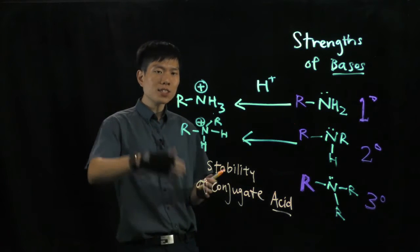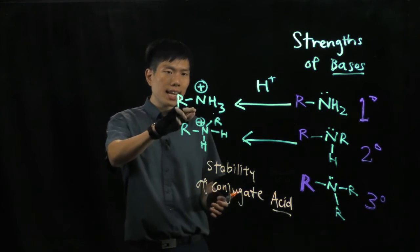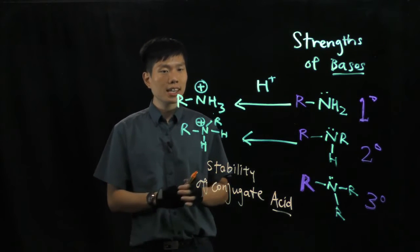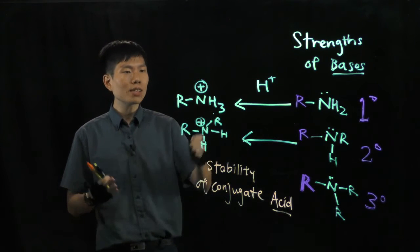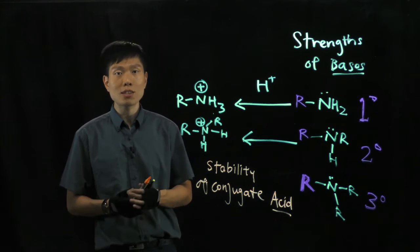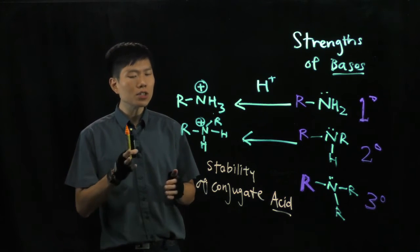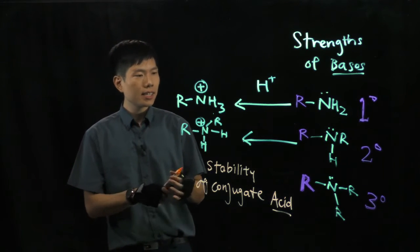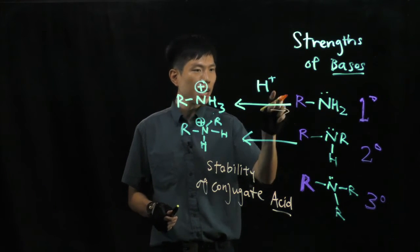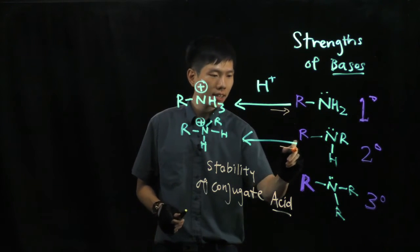Now let's compare these. We know that the N-H bond is kind of weak, and nitrogen doesn't really like to take a positive charge because it is the most electronegative element in the whole periodic table. So there is a chance that this can go back and dissociate into H+ and the free amine group.